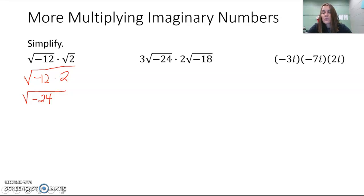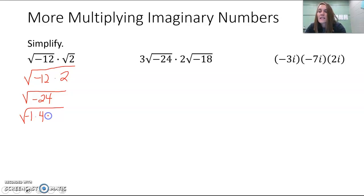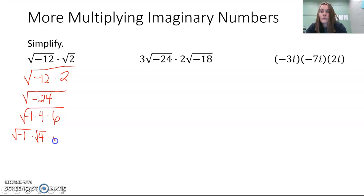You can make a factor tree, or think about what factors of 24 include a perfect square. Considering factors: 8 and 3 — doesn't work. 2 and 12 — doesn't work. 4 and 6 — 4 is a perfect square. So rewrite the square root of negative 24 by pulling out that negative 1, since that's what makes this an imaginary number — anytime we have a negative under a square root. Then times 4 and times 6, writing each as their own separate square root: √(-1) times √4 times √6.